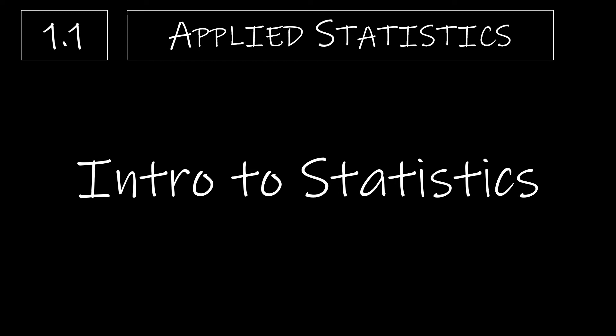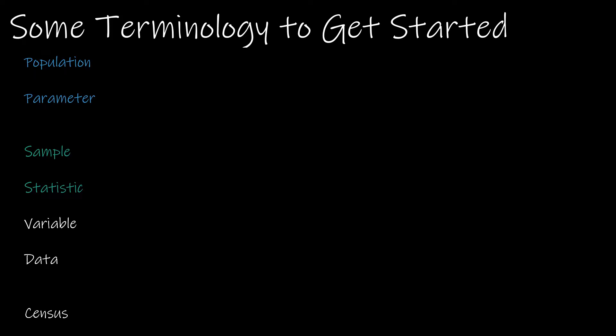Welcome to Lesson 1.1 Applied Statistics at Bellevue University. This first video is an introduction to statistics. Let's get started with some terminology, which is going to be important to understand all of the examples we'll look at moving forward. Population and parameter are both in blue, and sample and statistic are both in green, because we always talk about population with parameter and sample with statistic.